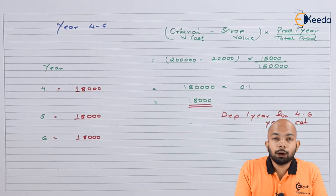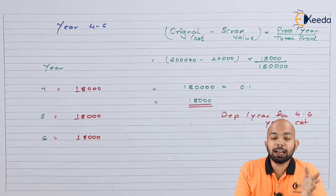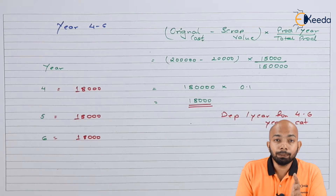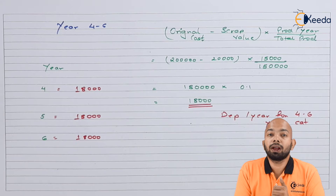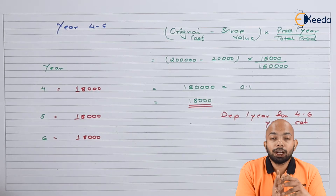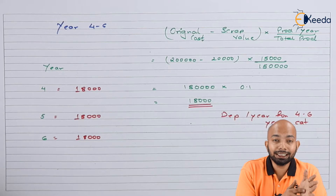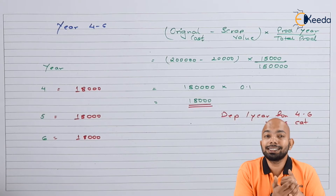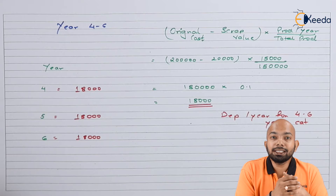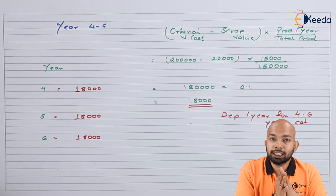For years 4 to 6: original cost Rs 2,00,000 minus scrap value Rs 20,000 gives Rs 1,80,000, multiplied by production of 15,000 units per year divided by total production 1,50,000. This gives 1,80,000 × 0.1 = Rs 18,000 per year. So for the 4th, 5th, and 6th year, the depreciation is Rs 18,000 per year. Now let's calculate depreciation for the last category, years 7 to 10.